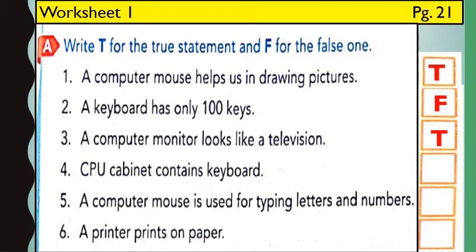And this CPU is called the brain of the computer. Fifth one: a computer mouse is used for typing letters and numbers. The statement is false, since a keyboard is used for typing letters and numbers, whereas a computer mouse helps us in drawing pictures and to point at the things on the monitor.